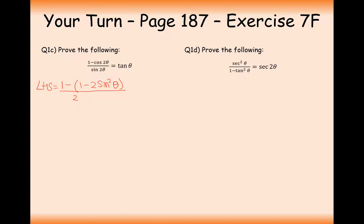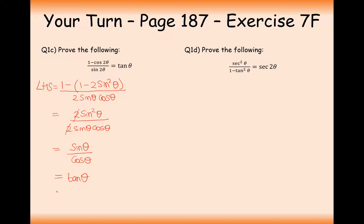For sin2θ there's only one version: 2sinθcosθ. Being very careful expanding brackets: subtracting a negative makes it positive, and 1 − 1 cancels out. So this simplifies to 2sin²θ/(2sinθcosθ). Cancel the 2s from top and bottom, cancel the sinθs from top and bottom, and you end up with sinθ/cosθ, which equals tanθ — the right-hand side. Proved.